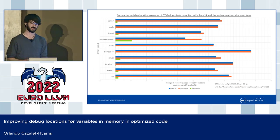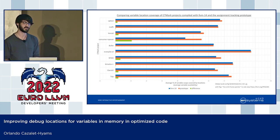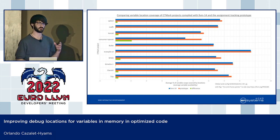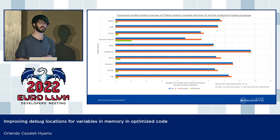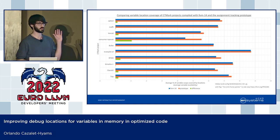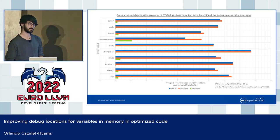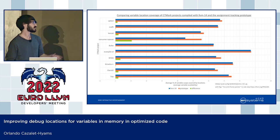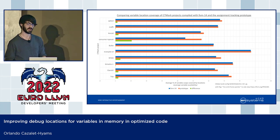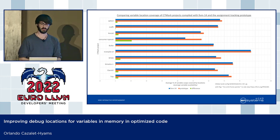I've run some initial experiments using this prototype, and here are some results. This graph shows variable location coverage when compiling with LLVM 14 and with the prototype, with optimizations enabled. The horizontal axis is the average percent of each variable's scope that has locations — basically average variable availability. If this number were 100, you'd always be able to see all your variables in scope in the debugger. The blue bar is LLVM 14, the orange bar is the prototype, and the green bar is the difference. Most projects get between one and three and a half percentage points increase in coverage. A couple aren't much affected, and there's one outlier, consumer-typeset, which gets around 10%. This averages to 2.1 percentage points increase, or 1.2 if you exclude consumer-typeset.